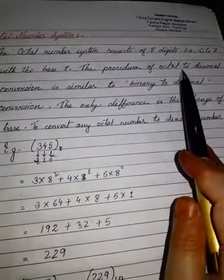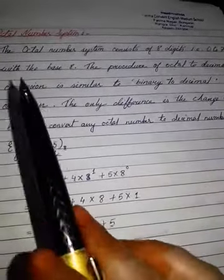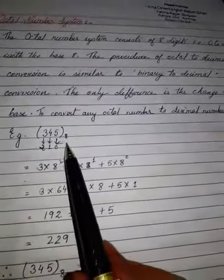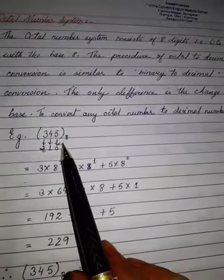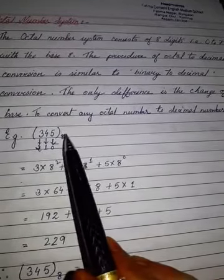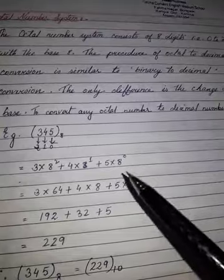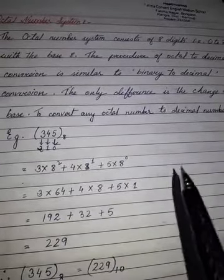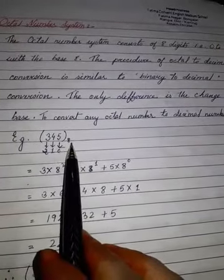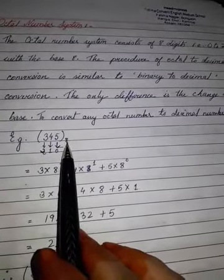The procedure of octal to decimal conversion is similar to binary to decimal — only the difference is the base. There, from binary to decimal, the base was 2 for binary and 10 for decimal. And here, since it is octal number system, the base is not 2, in place of that it is 8. So we will multiply with 8.